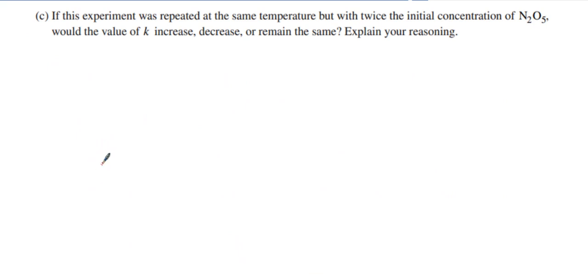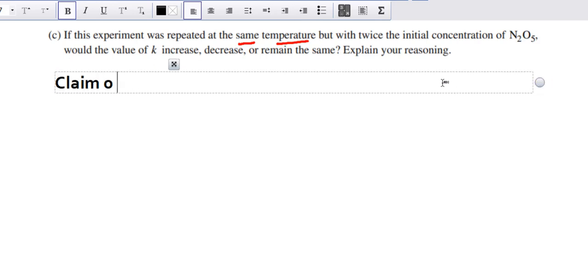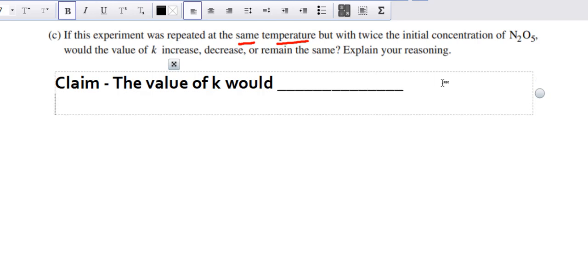The last part of this question says if the experiment was repeated at the same temperature but with twice the initial concentration of N2O5, would the value of k increase, decrease, or remain the same? And again, this is an explain your reasoning question, which means we're going to have to do our claim, evidence, and reason. So my claim is the value of k would something—it's going to increase, decrease, or remain the same.